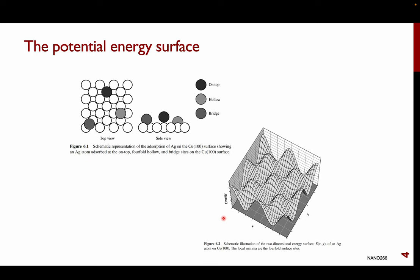Whenever we talk about transition states, we need to understand the concept of the potential energy surface, which is essentially the energy versus some set of coordinates. This is a very simple example where we think of the adsorption of silver on the copper 100 surface. The white atoms are your copper 100 atoms, and the dark-colored atoms are your silver atoms.